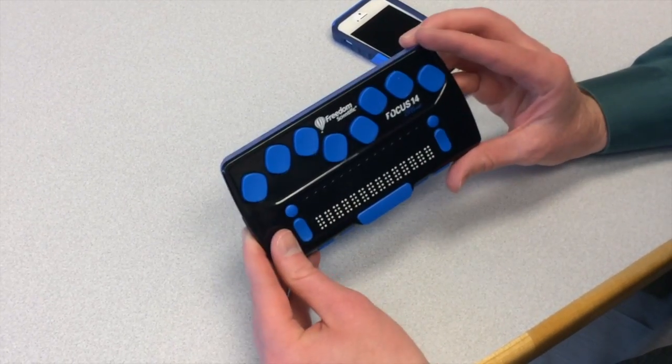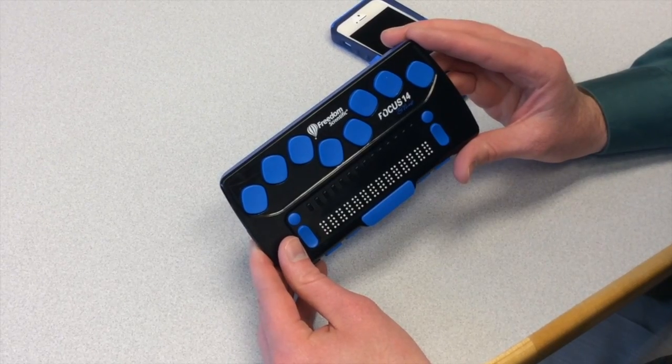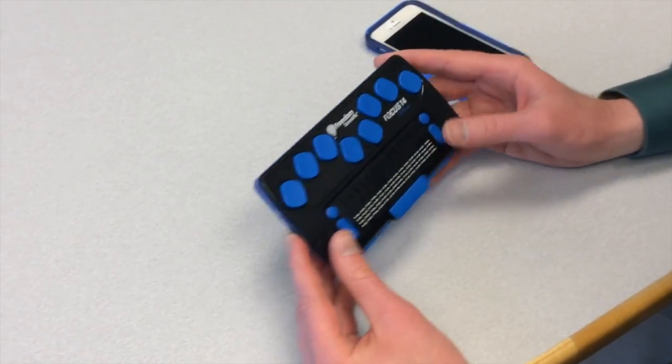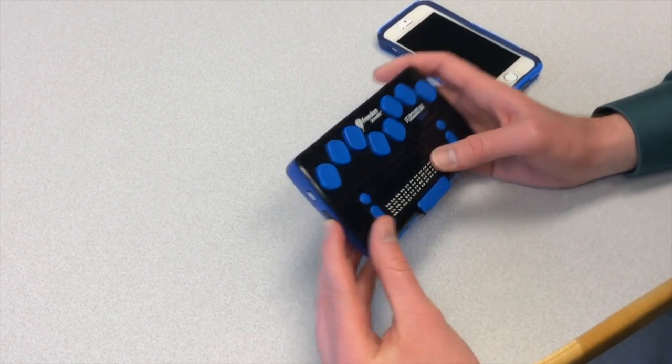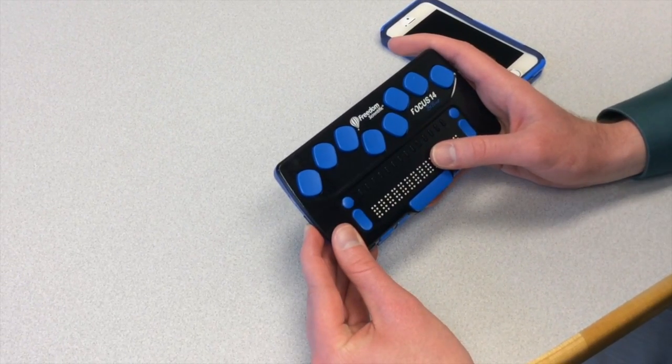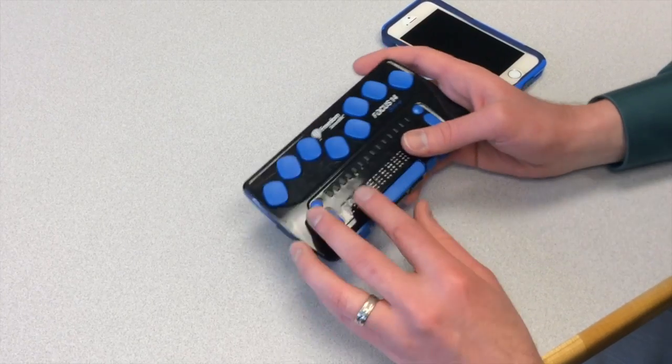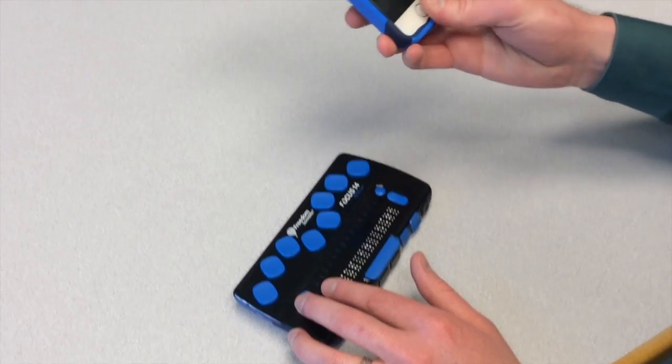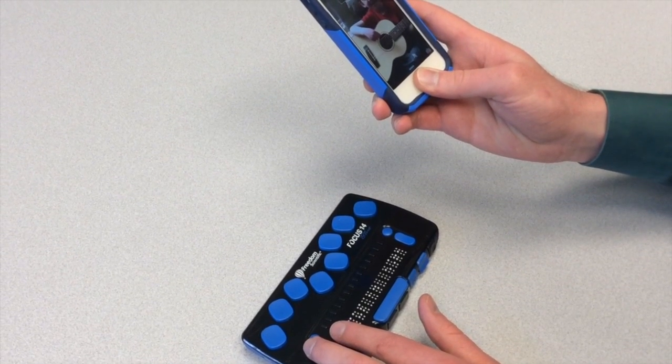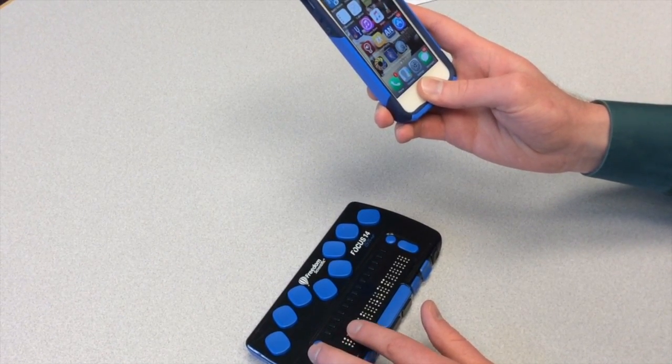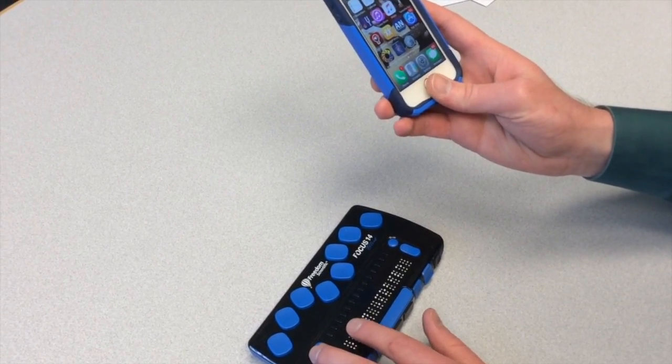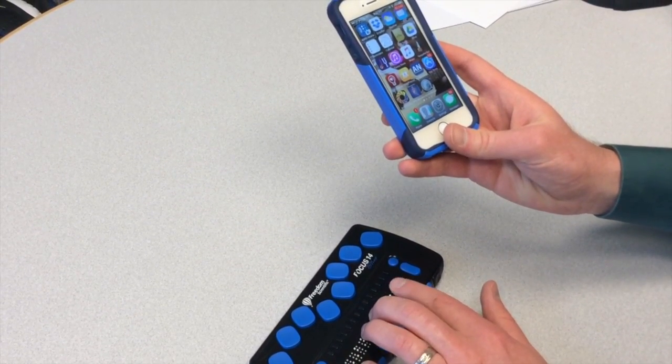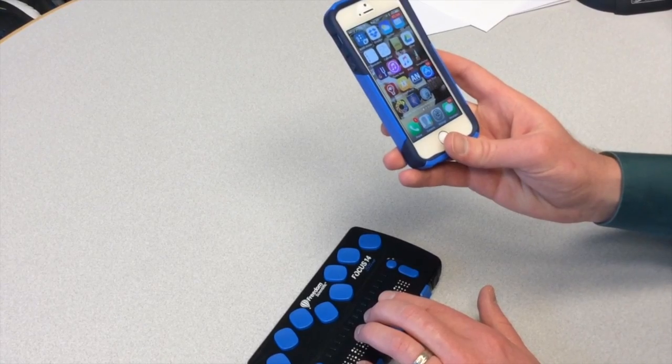I am using a Freedom Scientific Focus 14, and it's already been paired, so I'm going to turn on the Braille display first. There's a button on the left I'll hold down for a few seconds, and the Braille pops up. Now I'm going to unlock my phone, and it automatically pairs. I'm on the BARD mobile app already, and it shows that on the Braille display as well.